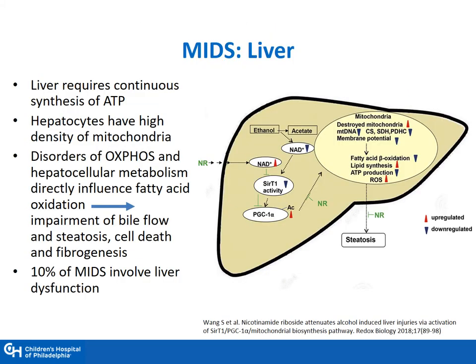That brings us to mitochondrial disease in the liver. The liver requires a continuous synthesis of ATP, and hepatocytes have a high density of mitochondria. When there are disorders or defects in OxPhos, there is a decrease in the synthesis of ATP. This leads to changes in the liver, with impairment of bile flow and steatosis, as well as cell death and fibrogenesis. About 10% of patients who have mitochondrial disorders actually involve liver dysfunction.